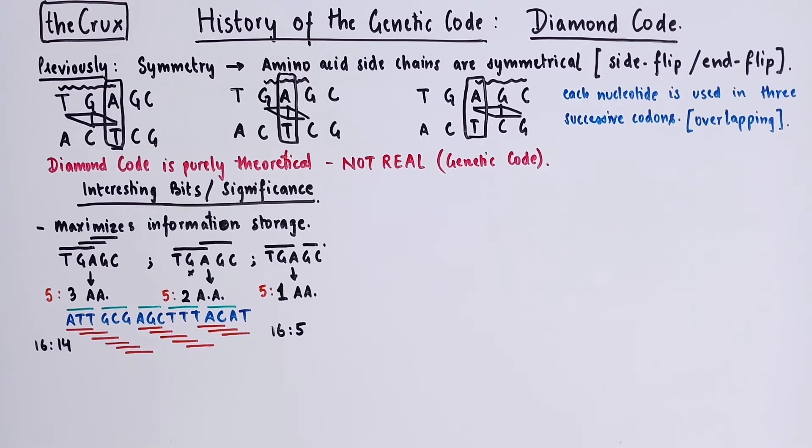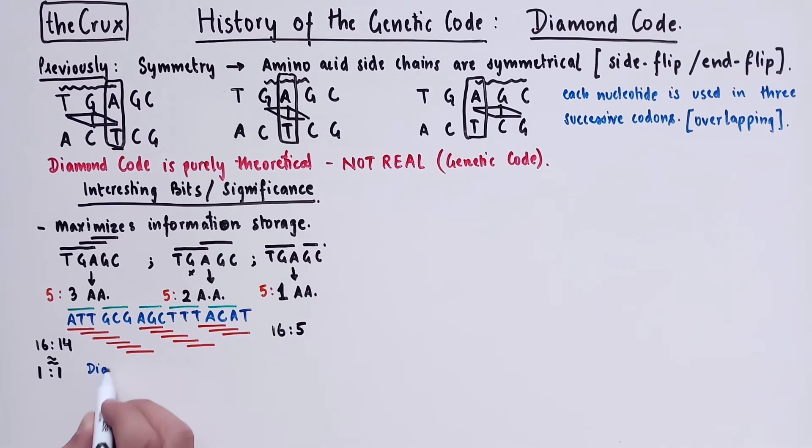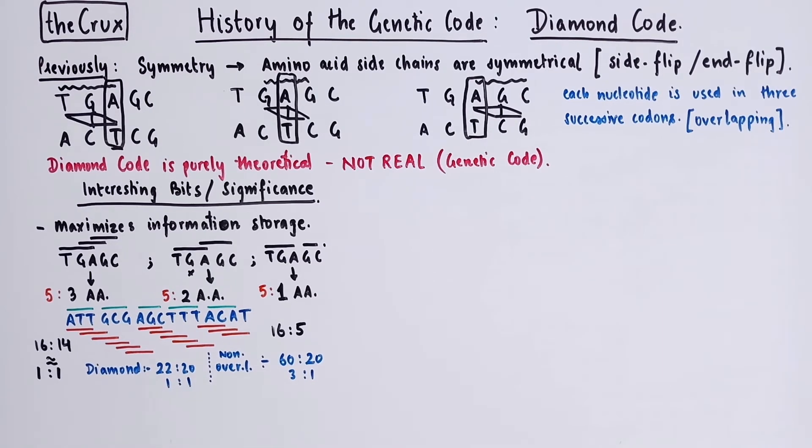And the maximization of information in the diamond code is such that the ratio of the number of bases to the number of amino acid becomes one to one, which is the highest you can have. And this is equivalent to saying that on average, each base has the potential to code for one amino acid. So in general, in the diamond code, you would have 22 bases for 20 amino acids, which is pretty close to about one to one ratio. Whereas in a non-overlapping code, you would need 60 bases, which gives you a three to one ratio of the number of bases to the number of amino acids.